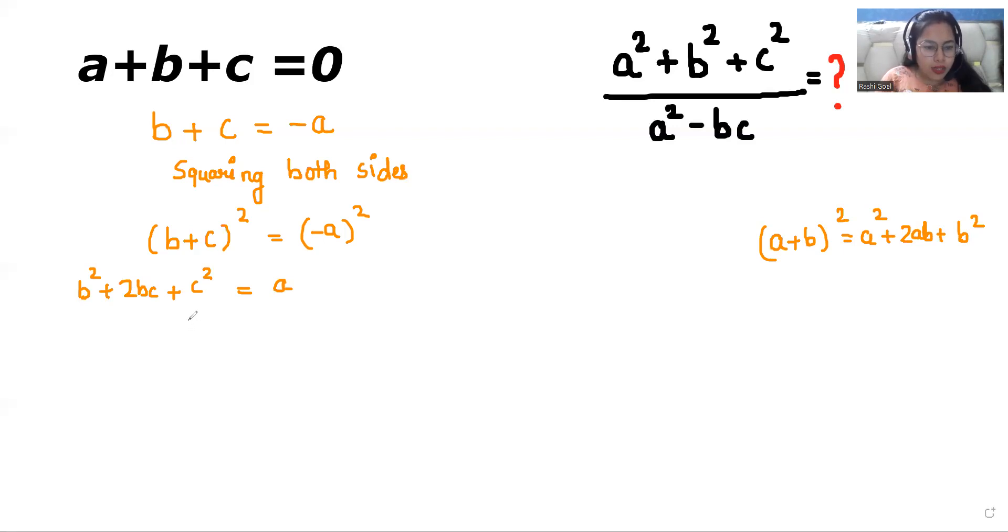Now in the next step I'm adding a square to both sides. Therefore a square plus b square plus c square plus 2bc is equals to two a square.